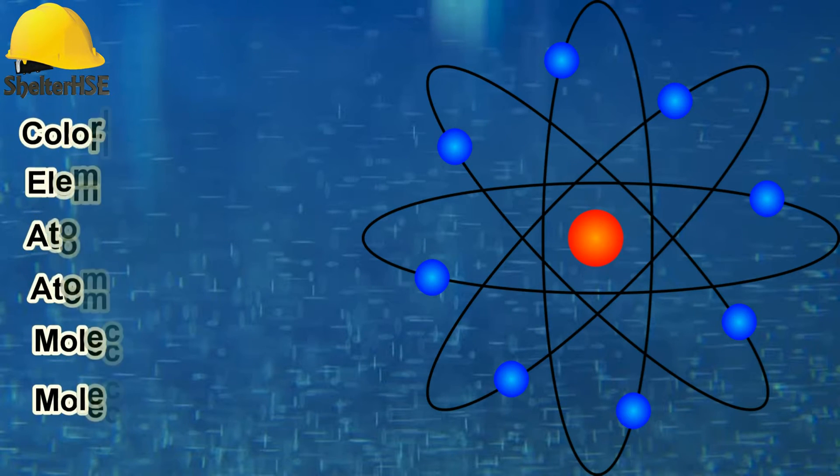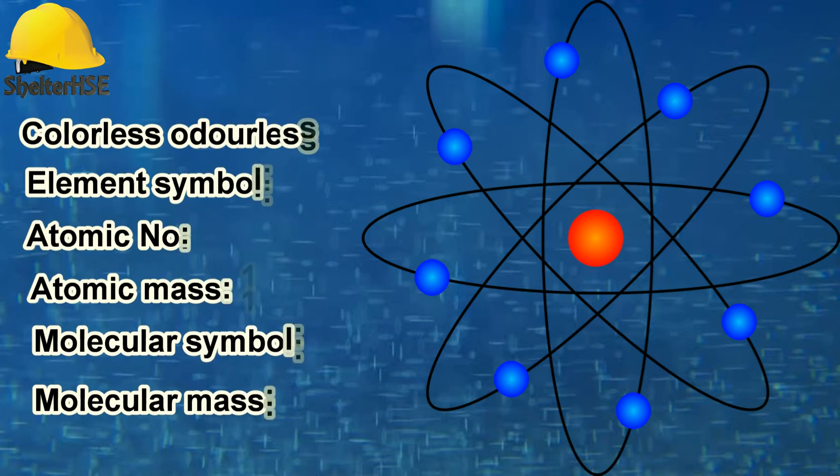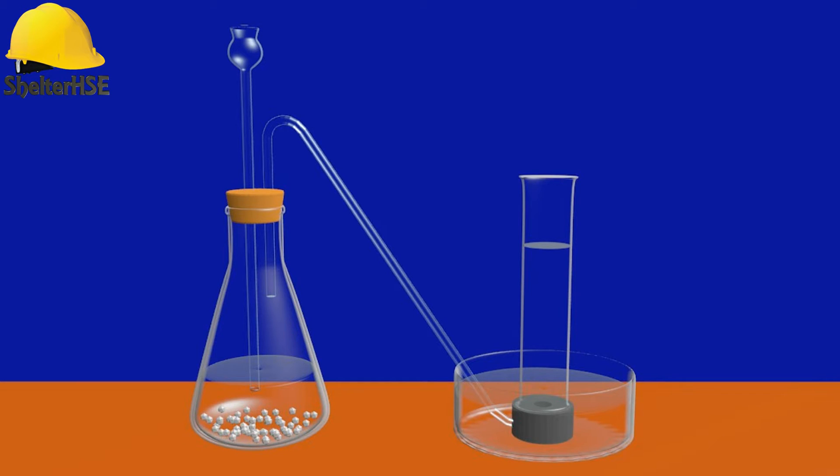Oxygen gas is colorless, odorless, and tasteless. The liquid and solid forms are a pale blue color and are strongly paramagnetic. Oxygen gas has element symbol O and its molecule is O2. Oxygen's atomic number is 8 and its atomic weight is 16. Oxygen gas can be prepared in laboratory in many ways. One of the ways to prepare